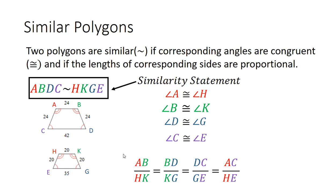This is our extended similarity ratio. AB corresponds to HK, then BD corresponds to side KG, and then DC corresponds to GE. And then AC — A is the first letter and C is the last letter — corresponds to HE, where H is the first letter and E is the last letter. So those sides also correspond. This means the ratio of AB to HK, which is 24 over 20, will equal all the other corresponding side ratios.